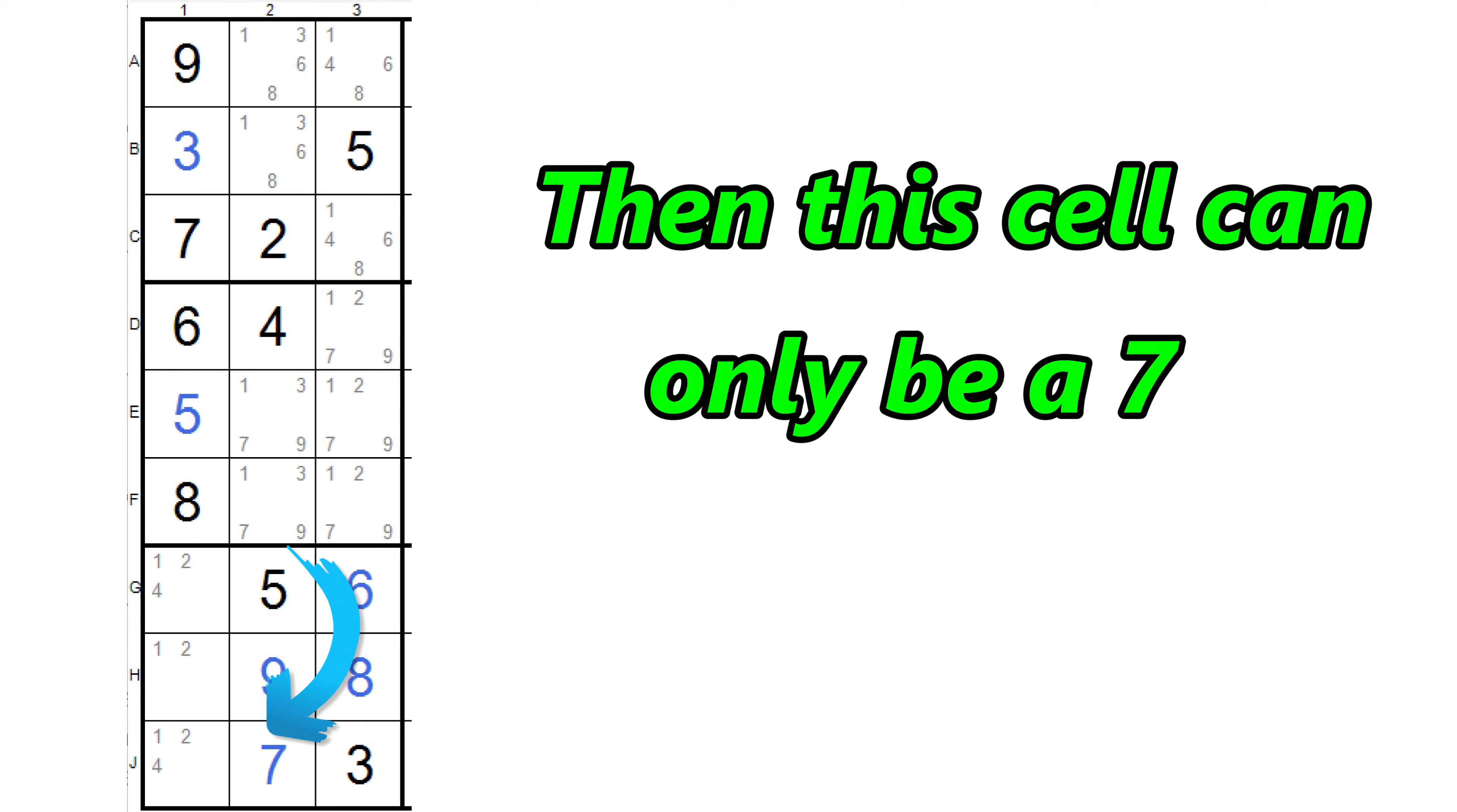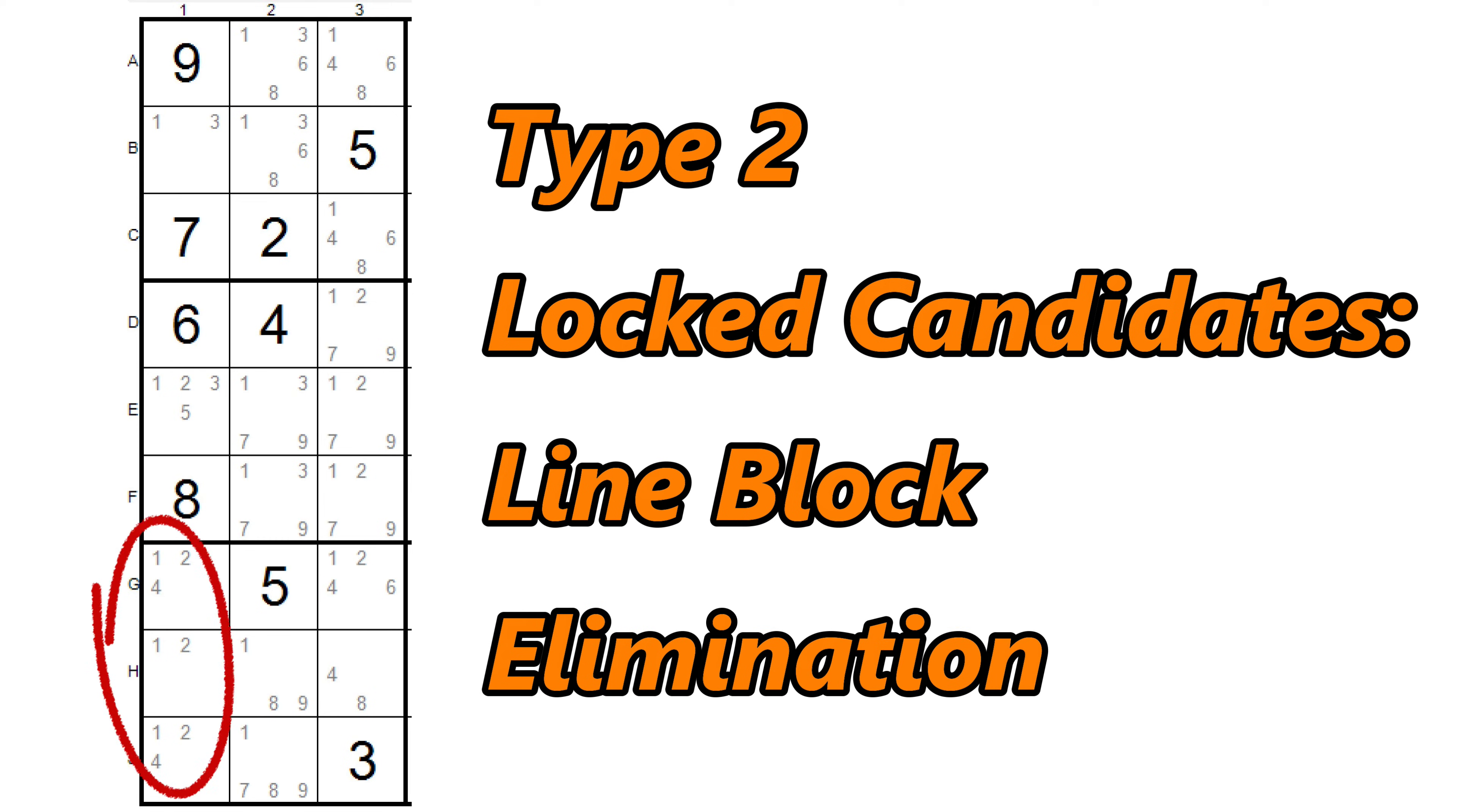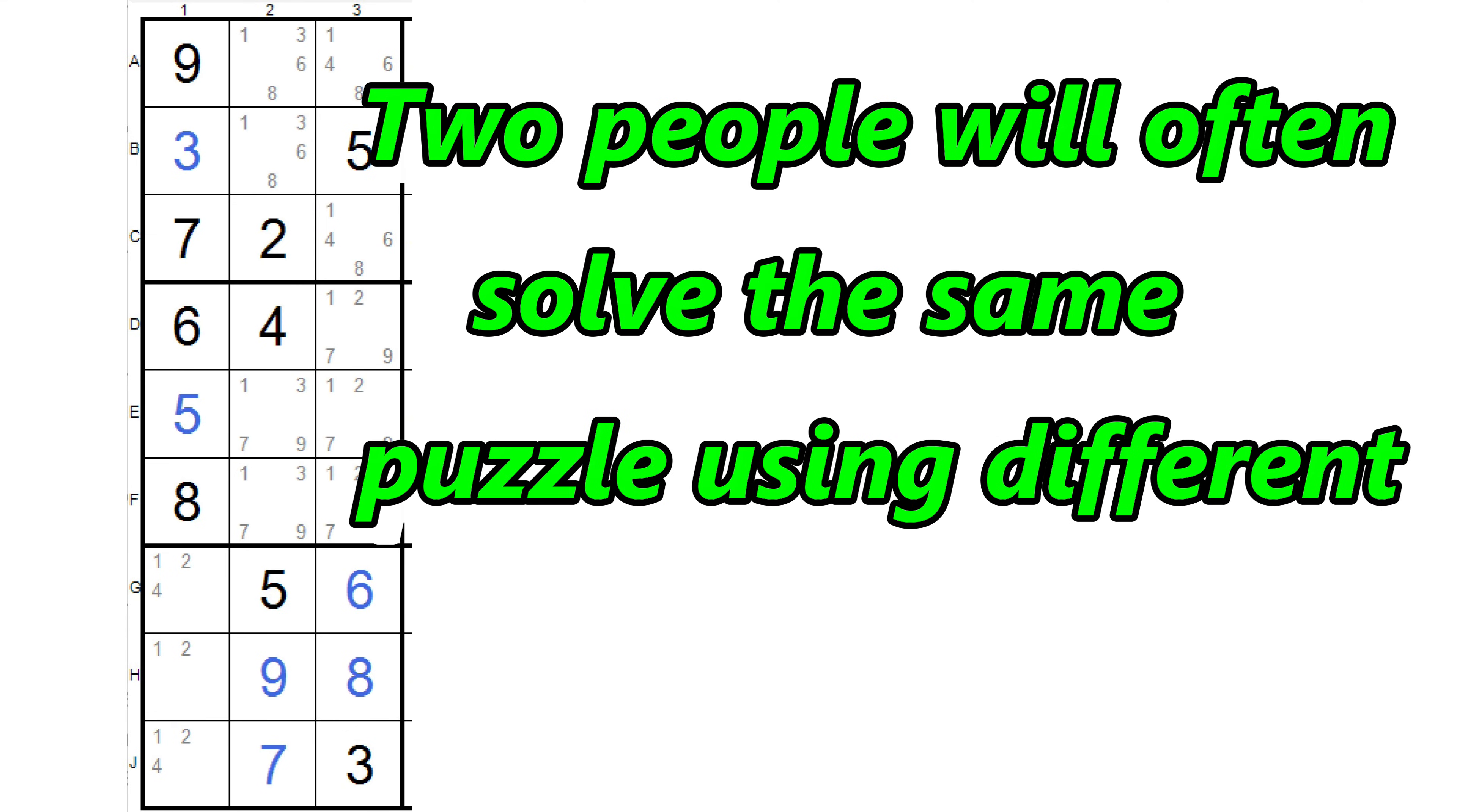I started this example by showing you the locked 4s in column 1, and then eliminating all the other 4s in the block as an illustration of type 2 locked candidates. But in this case, the locked candidates were also part of a triplet, so we could have eliminated the 4s that way as well. Many times you can get to the same endpoint using different methods. Actually, this happens quite often. Two people will solve a puzzle in different ways depending on what they see first and how their brain works out the logic.